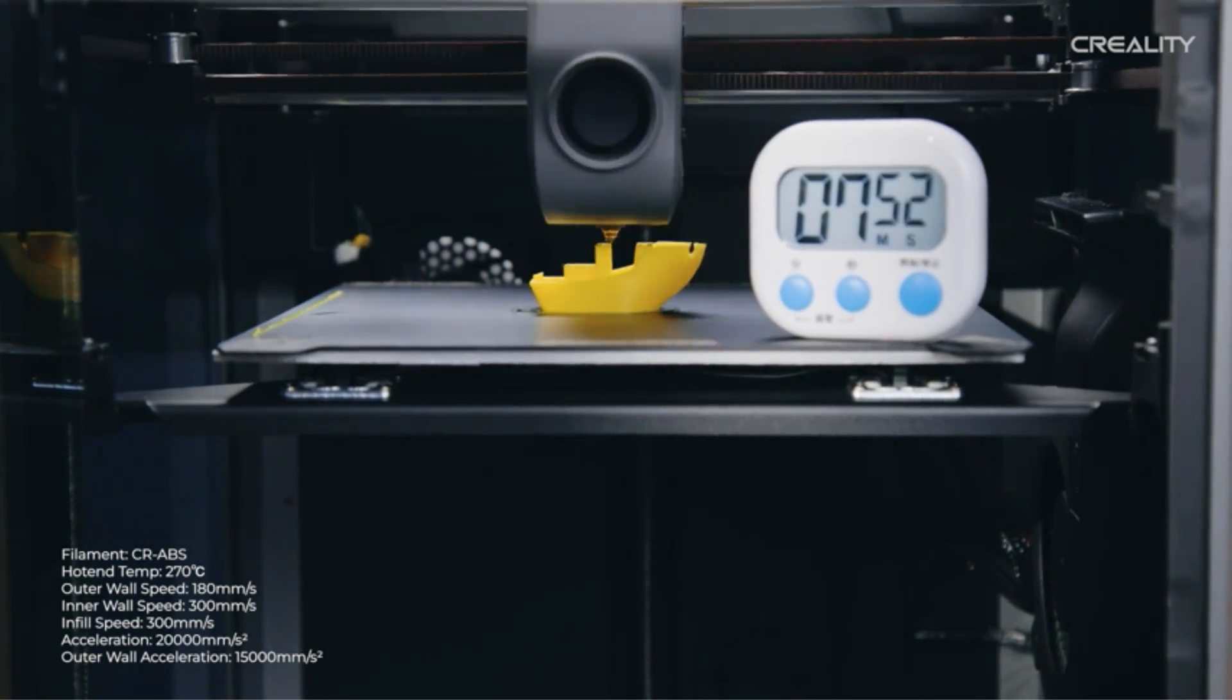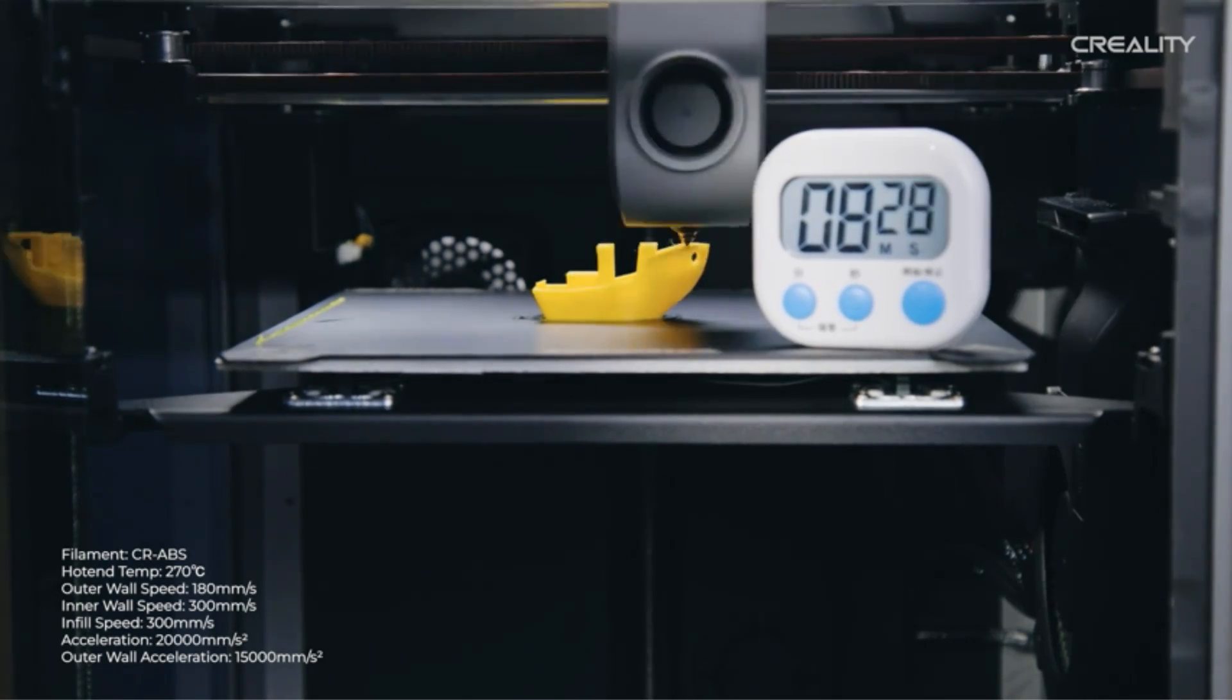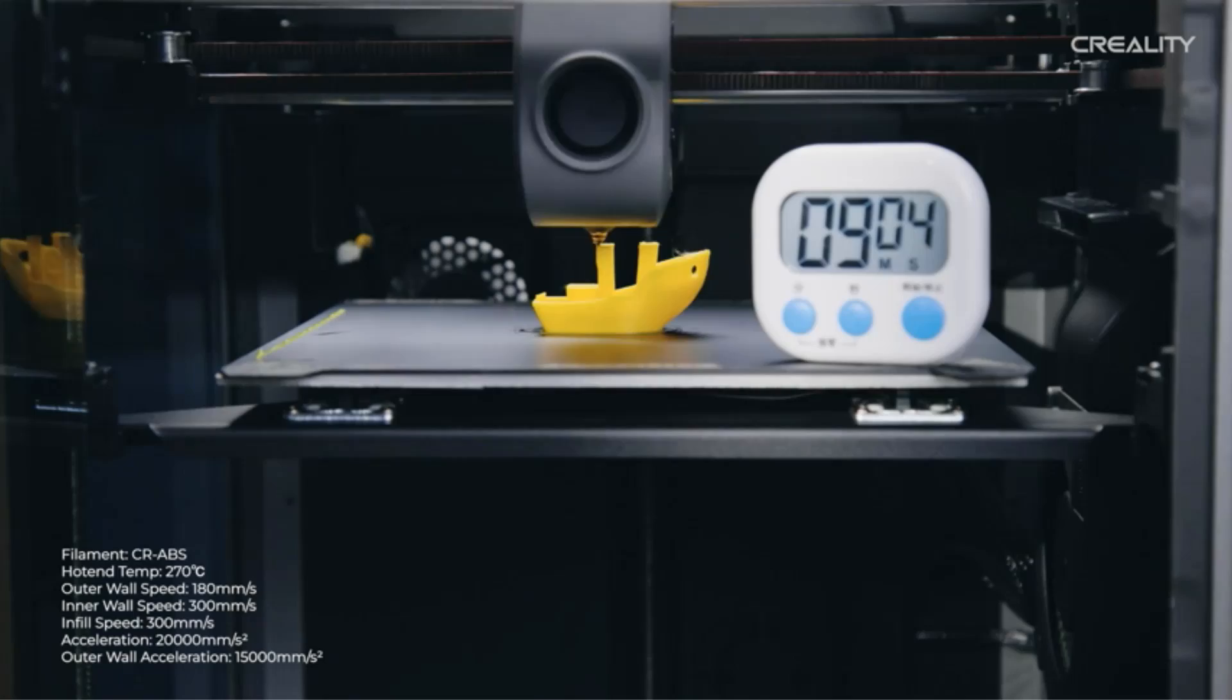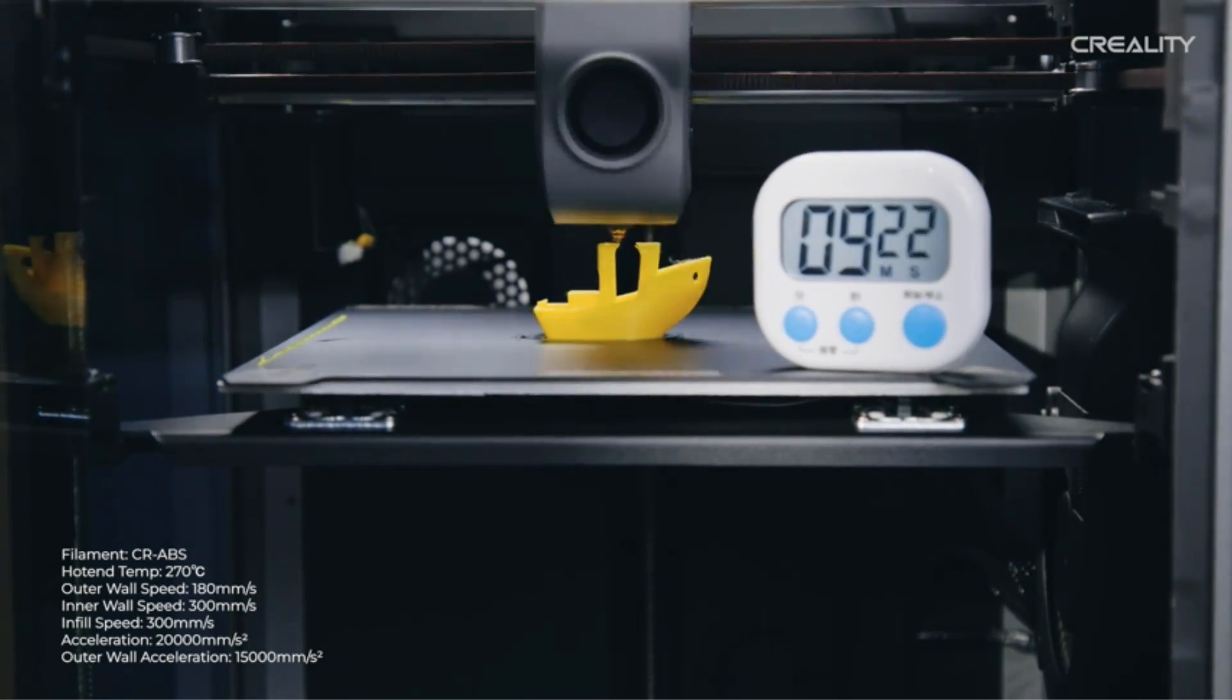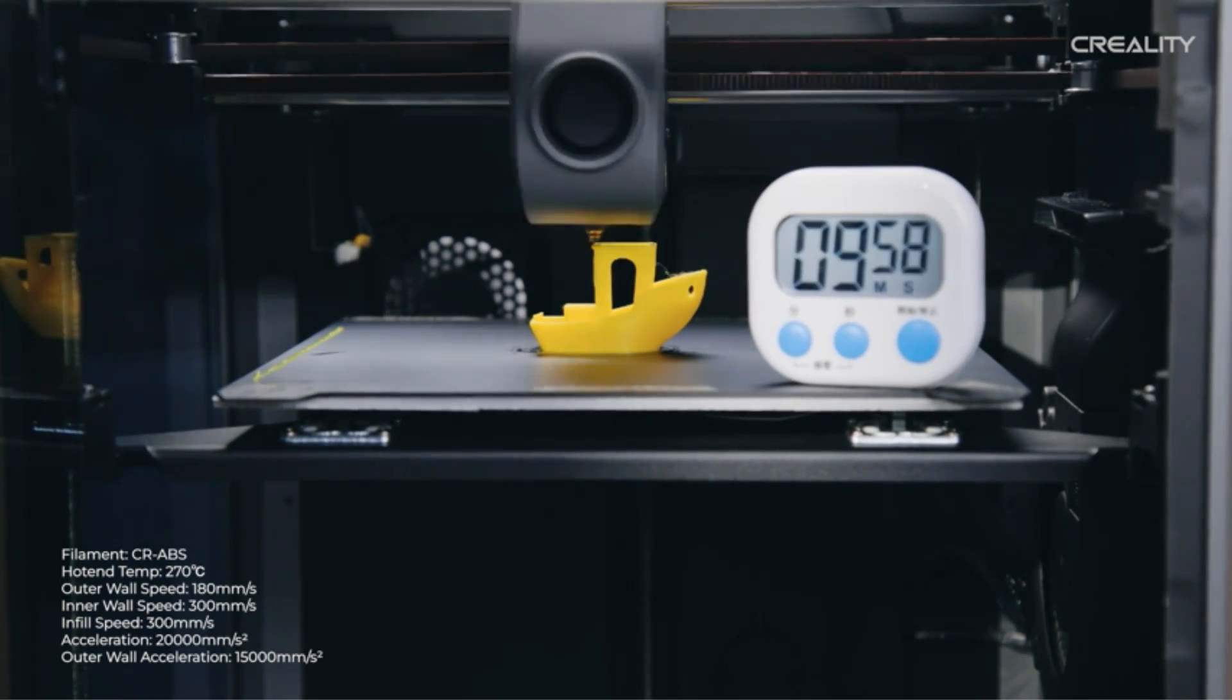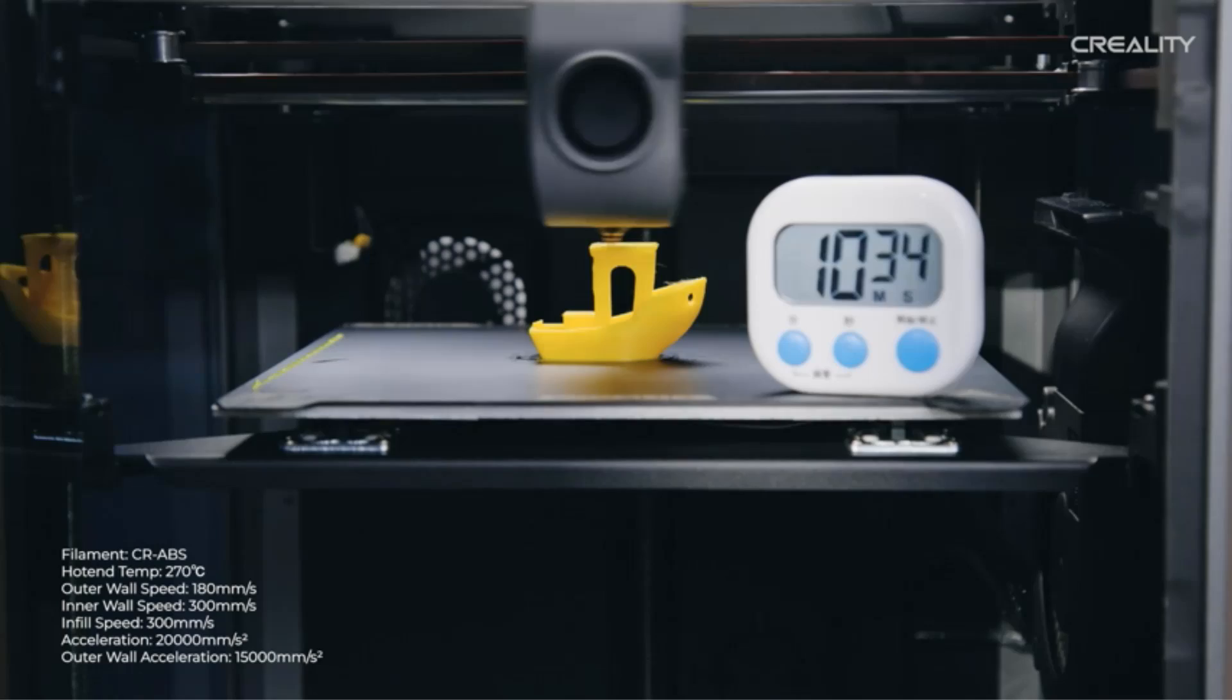Creality K1 can print via USB drive or Wi-Fi. Creality K1 can be controlled or monitored remotely from Creality print or Creality cloud app. Also allowed when many K1 printers are online. Once the printing is complete or abnormal, a notice will be sent to your phone or PC. No more close watch.